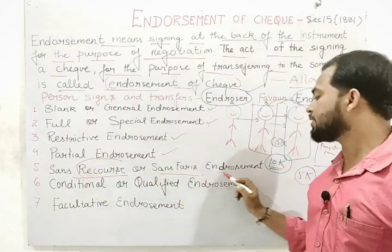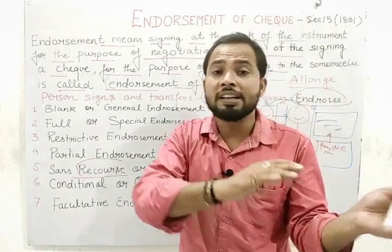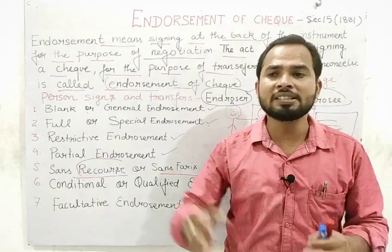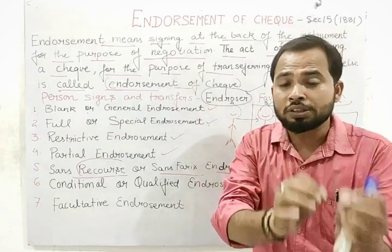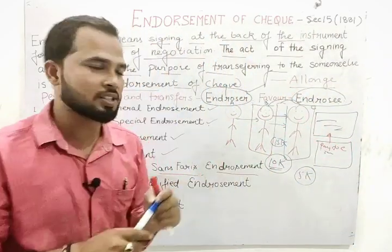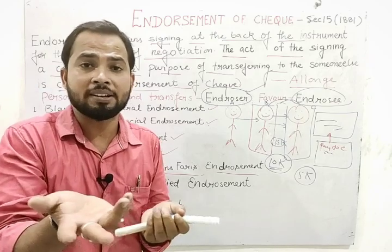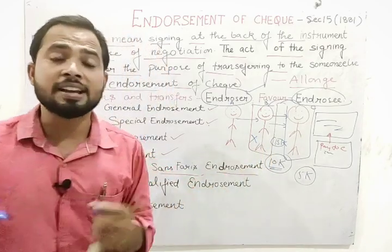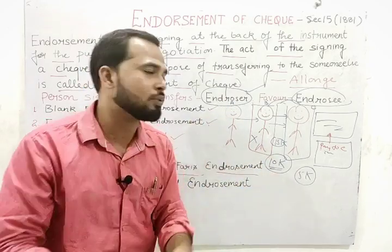The fifth type is sans recourse endorsement — literally meaning 'without recourse.' In this case, the endorser excludes his own liability. The endorser writes that if in the future something happens — if the check bounces — he will not be responsible. So if Mr. B gives a check to Mr. C with 'sans recourse' written, and the check bounces, C cannot blame B, because B has already mentioned sans recourse and excluded his liability.